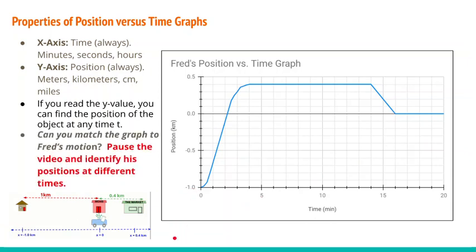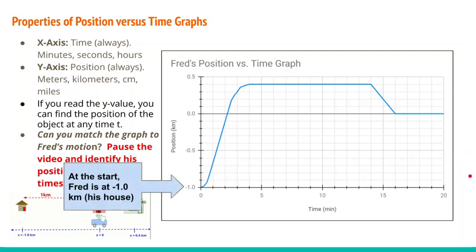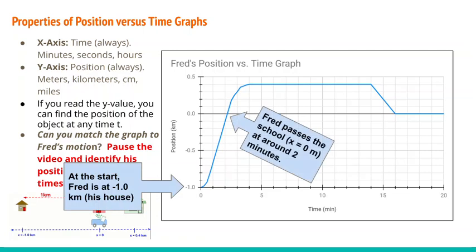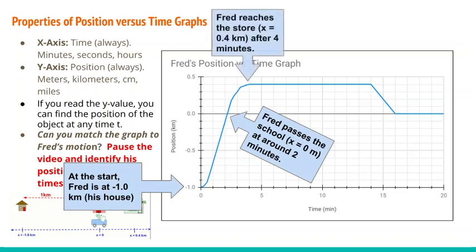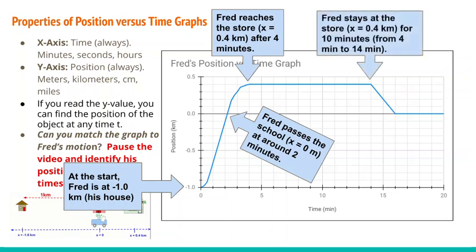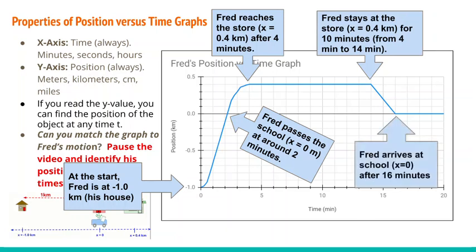Pause the video and look at the graph. Look at the y-values throughout and see if you can figure out where Fred is at different times. At the start, Fred is at negative 1 kilometer — that's at his house. He crosses the school just after 2 minutes, so he's at x equals 0. He reaches the store at 0.4 kilometers after 4 minutes. Then he stays at the store for 10 minutes, until 14 minutes. Then he returns to school, arriving at 16 minutes.